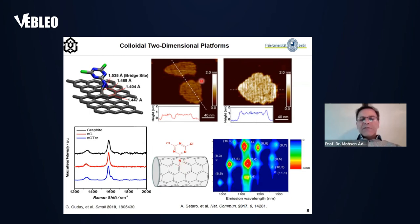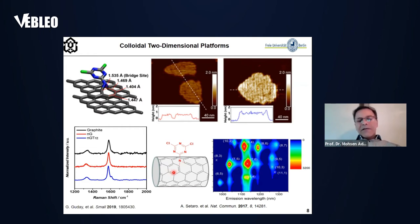This is an AFM image of our functionalized graphene sheet. As you can see, before and after functionalization the integrity of the sheets and their height is almost the same. The blue spectrum is the Raman spectrum of the functionalized graphene sheets — the D to G ratio has not changed, meaning we have not produced sp3 carbon atoms after covalent functionalization. Even with high density of this functional group, the luminescence of single-walled carbon nanotubes is preserved, confirming we have not distorted the pi-conjugated system.